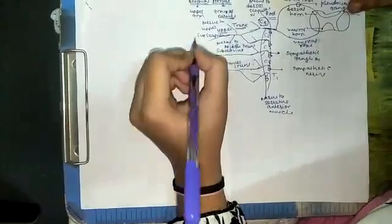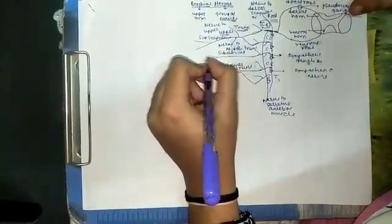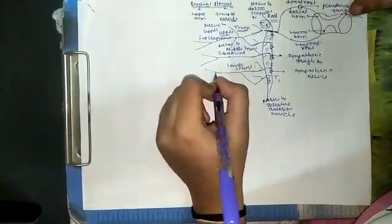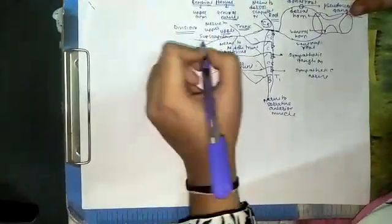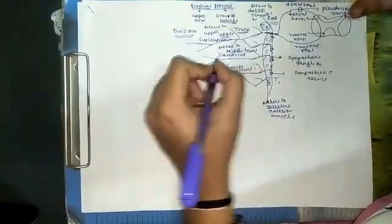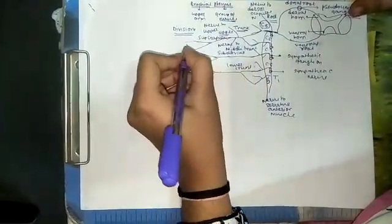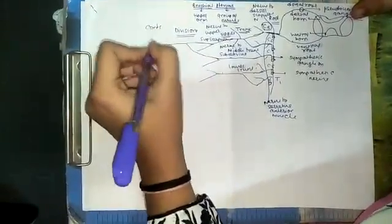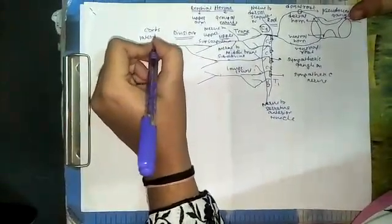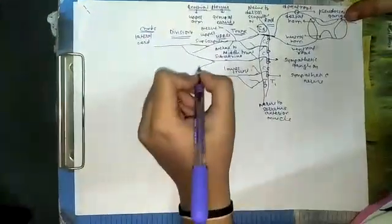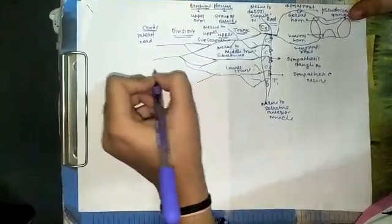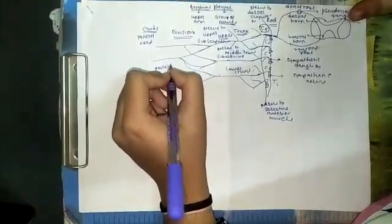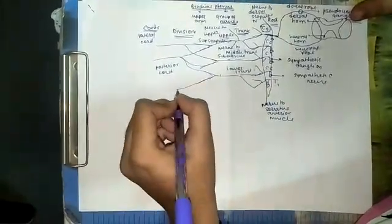This trunk divides into two divisions: dorsal division and ventral division. The third structure which forms in this plexus is the division. The ventral division of the upper trunk and middle trunk together form the lateral cord. The dorsal division of all three trunks gives rise to the posterior cord. And the ventral division of the lower trunk gives rise to what is known as the medial cord.